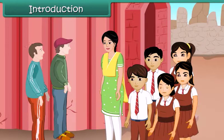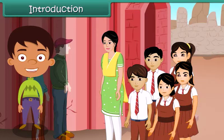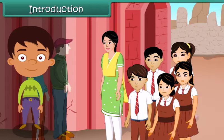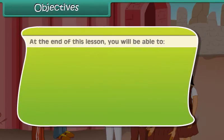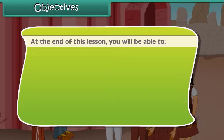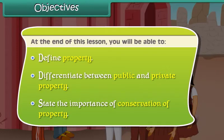Latamam tells them that such monuments are public property. As citizens of India, it is our responsibility to protect them, so it is no good writing on them. Let us learn more about properties in this lesson. At the end of this lesson, you will be able to define property, differentiate between public and private property, and state the importance of conservation of property.